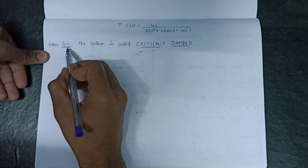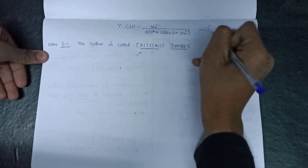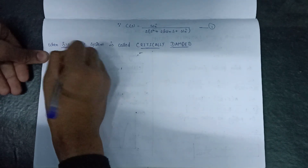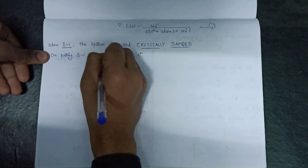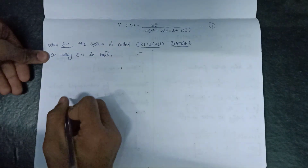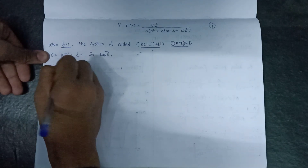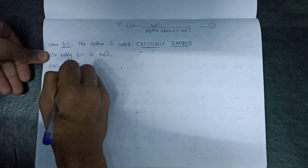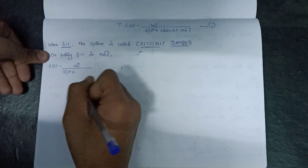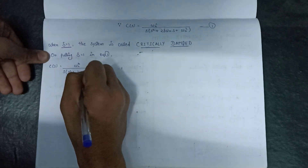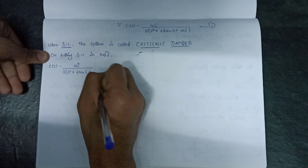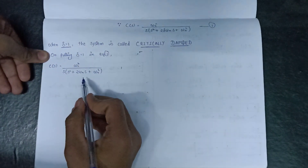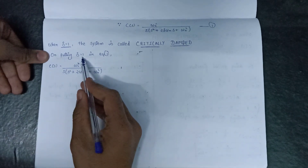On putting the value of delta equals 1 in the equation, C(s) will be equal to ω_n² over s(s² + 2ω_n·s + ω_n²). So this is the expression we get by putting delta equals 1 into the original expression.